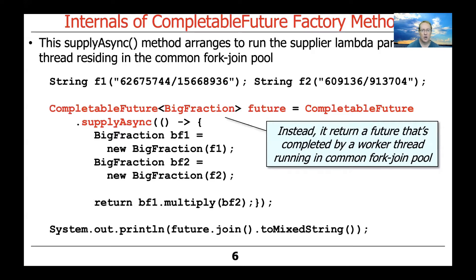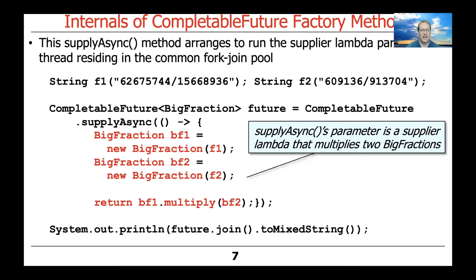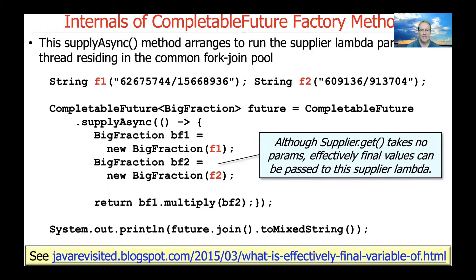supplyAsync simply queues up the supplier lambda passed as a parameter, and that gets processed by a thread in the common fork-join pool. You'll also notice that it returns a CompletableFuture — I'll sometimes say 'future' as shorthand, but always be aware I'm talking about CompletableFutures. So it returns a CompletableFuture that's completed by a worker thread running in the common fork-join pool. The parameter passed to supplyAsync is the supplier lambda that multiplies two big fractions together.